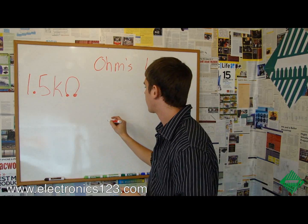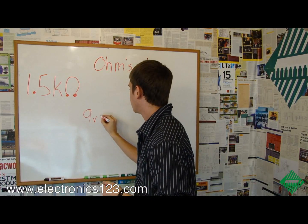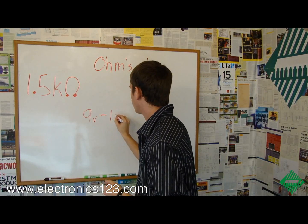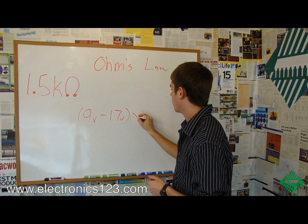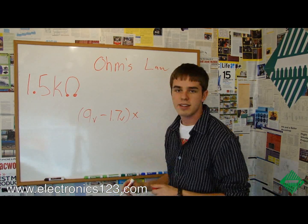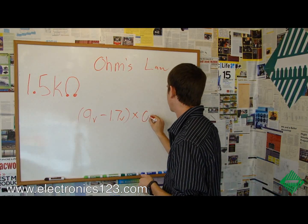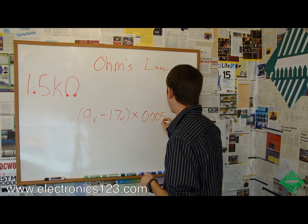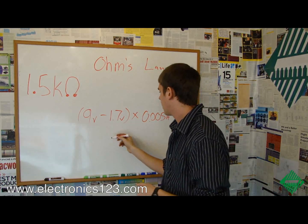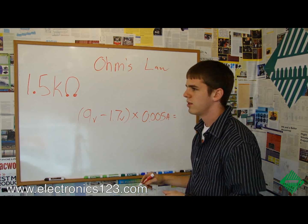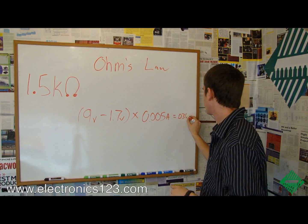We simply take the original 9 volts, subtract the 1.7 volts, and multiply that times the original number of amps being used, which is 0.005. And we get about 0.036 watts.